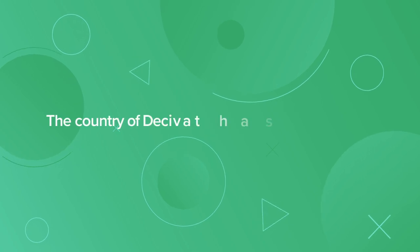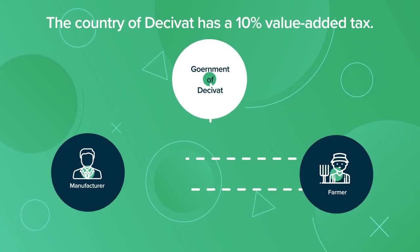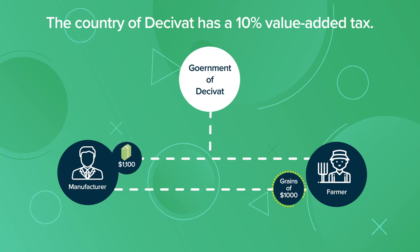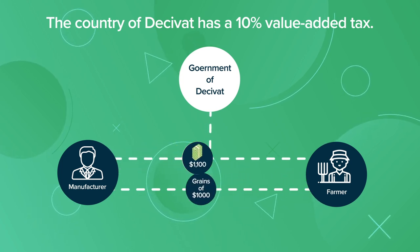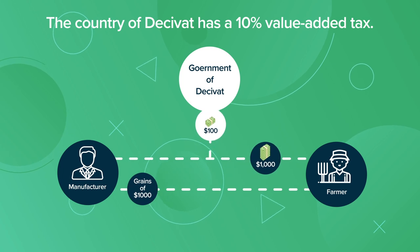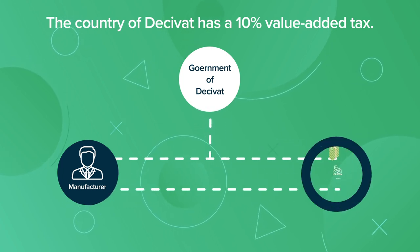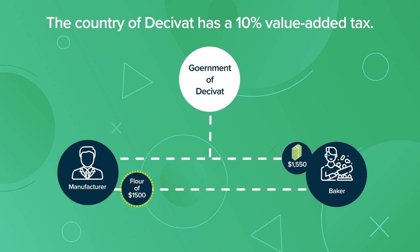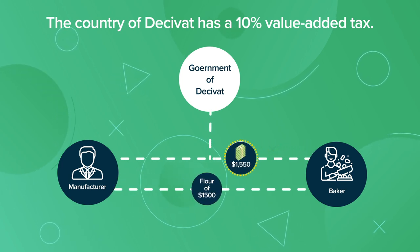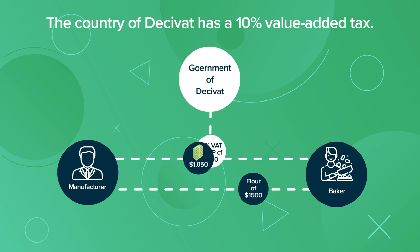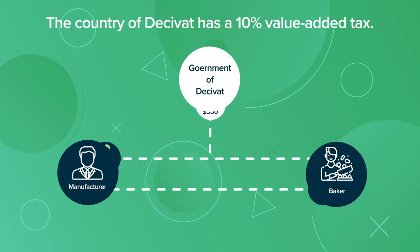The country of Desivat has a 10% value-added tax. A flour manufacturer will buy $1,000 worth of grain from a farmer for $1,100, $100 of which will go to the government as value-added tax. To create flour, if the manufacturer sells the flour to a baker for $1,500, he will charge $1,550, since a 10% value-added tax is imposed on the gross profit of $500.